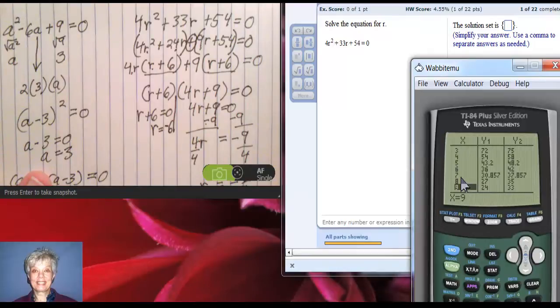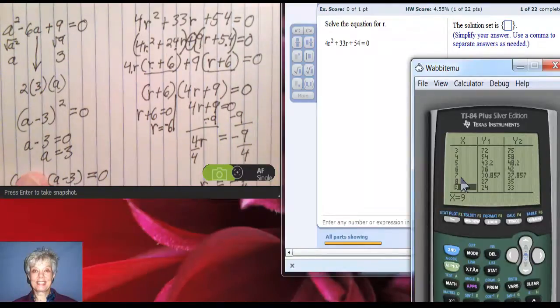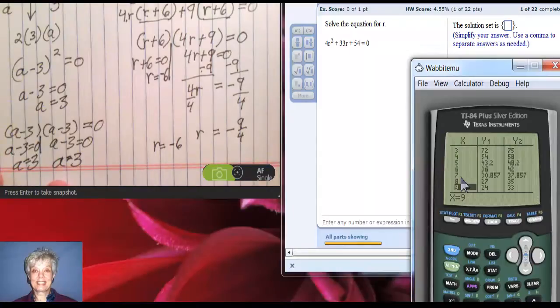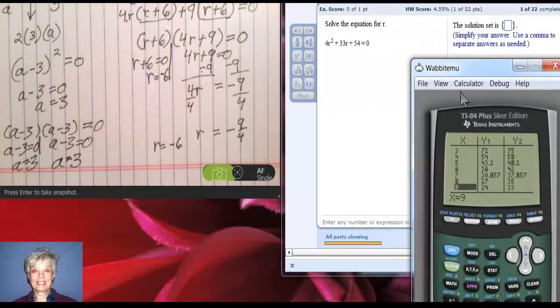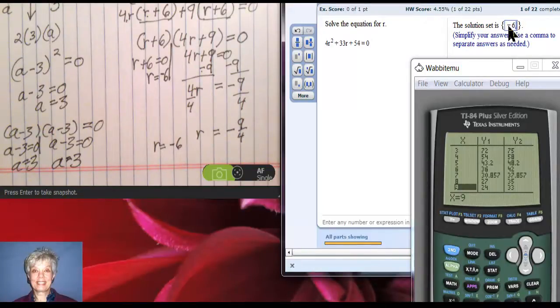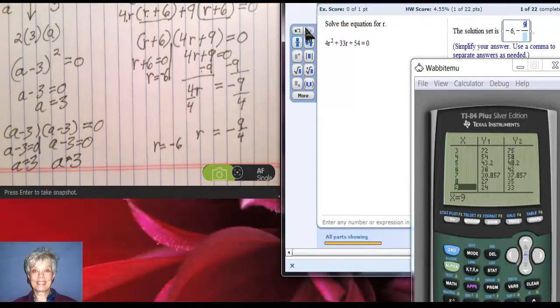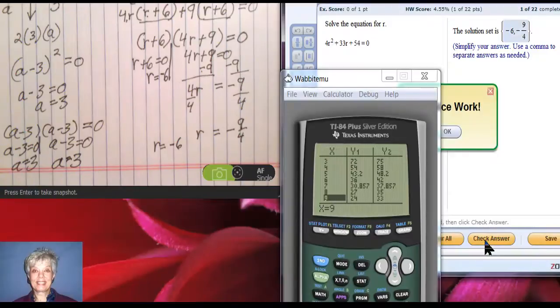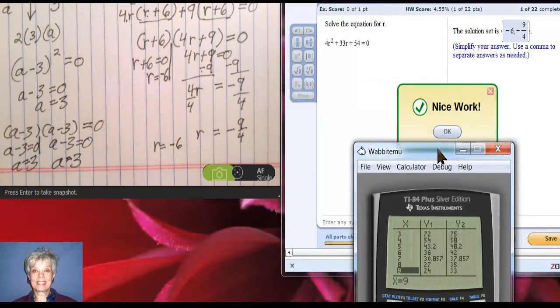So I have two solutions. I have r = -6, and r = -9/4. Let's put that into the answer box and see what it says. Negative 6, comma, negative fraction 9 over 4. Okay. Moment of truth. Woohoo! That's always nice to see.